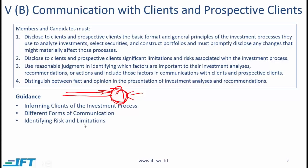Identifying risks and limitations: whenever you describe your process, you also need to describe the risks and limitations associated with the investment process. For example, if you are expressing an opinion about a product that has only been in existence for two years, and your analysis is based on two years of empirical data, that in itself is a limitation that needs to be clearly communicated. You also need to make clear if a particular investment is heavily correlated with the market, so the risk of it going down when the market goes down is high.